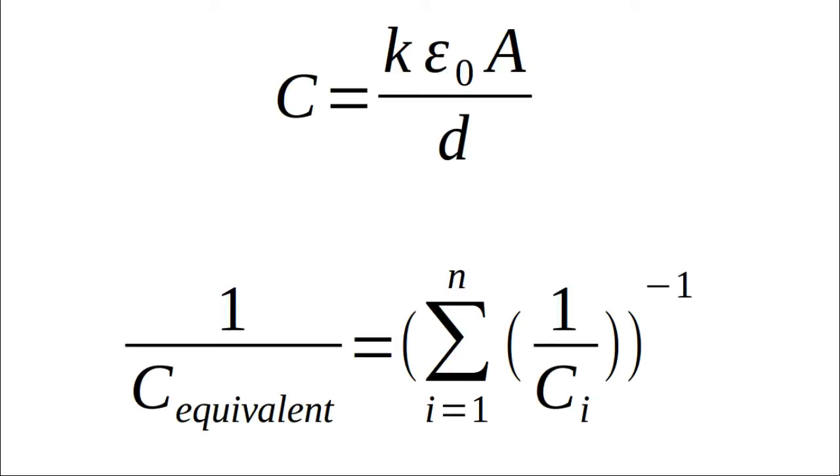Then on the bottom, we have how capacitors add in series. You can think of two different dielectric materials between capacitor plates as different capacitors in series. So we'll use the bottom formula to add up their contributions to capacitance.